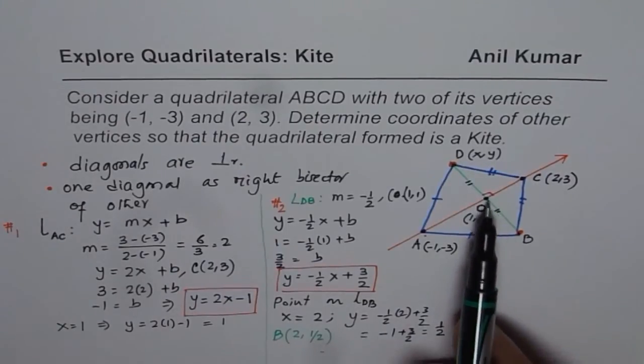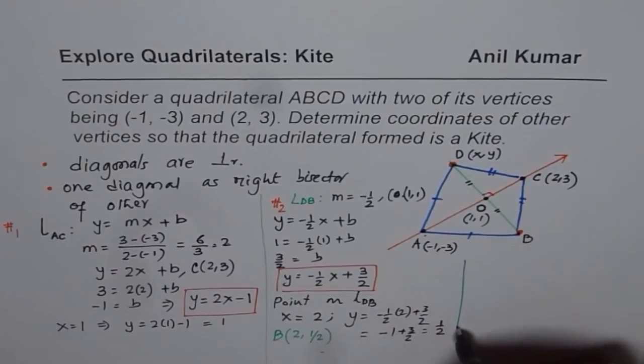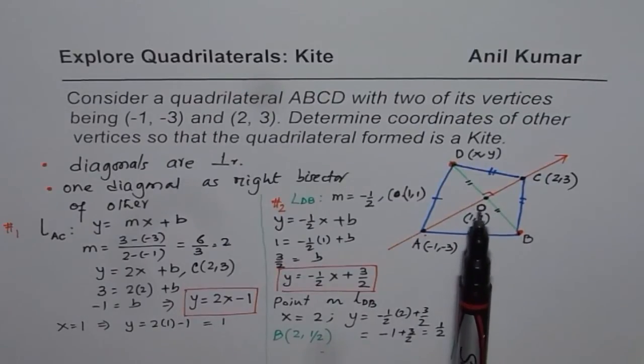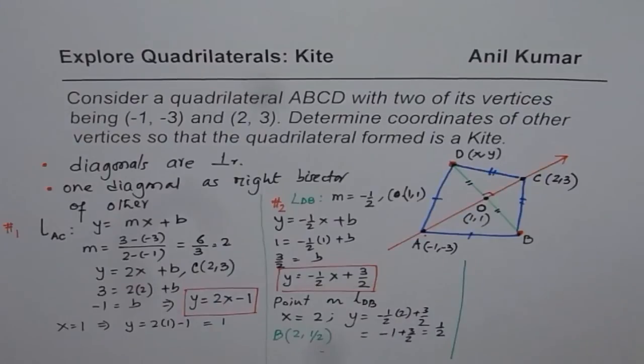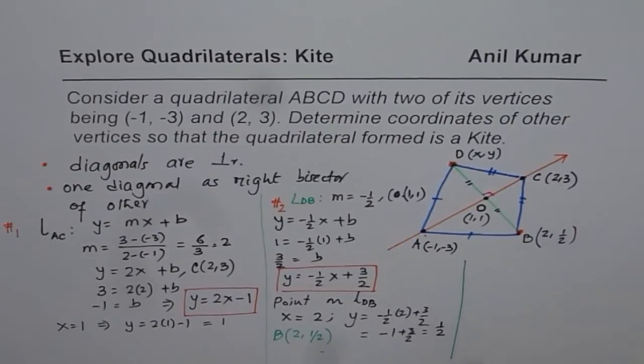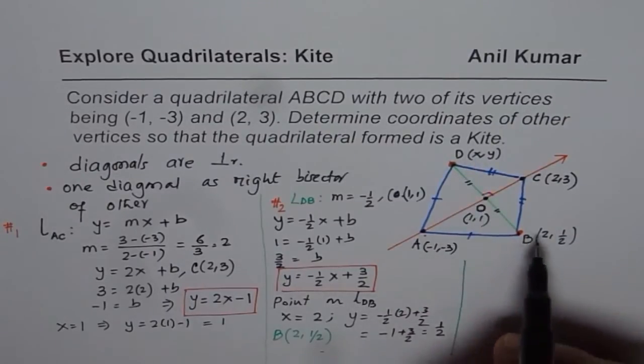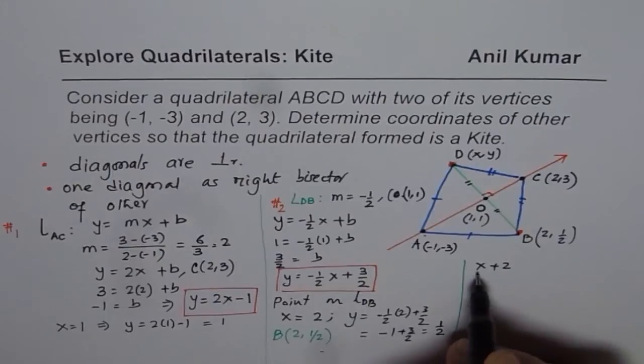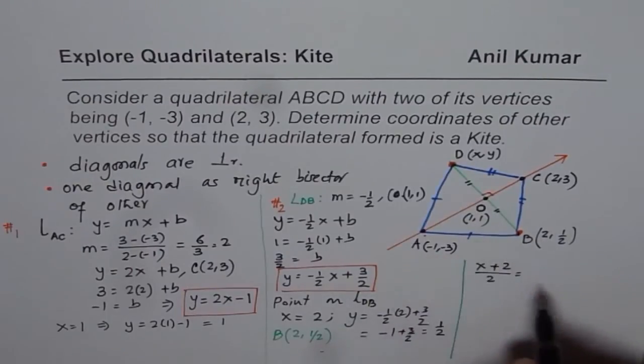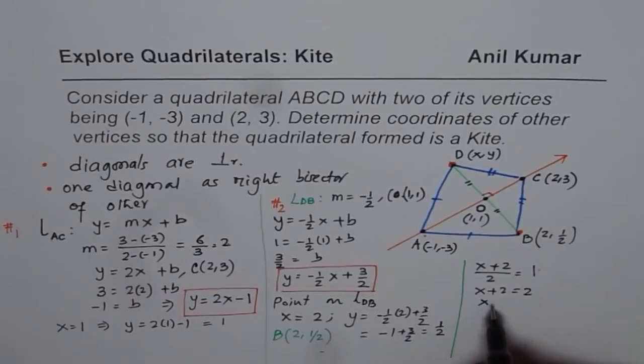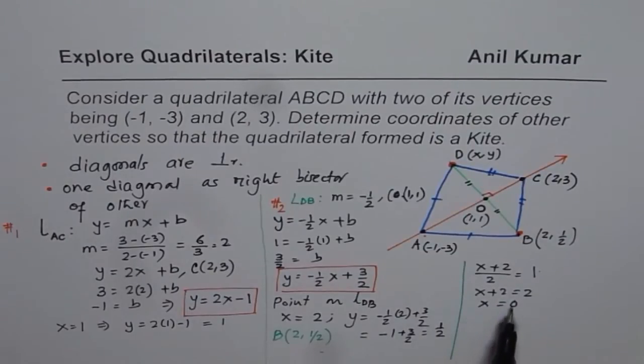Now, we know the coordinates of point B. How do you find coordinates of point D? That is the next question. We know that (1, 1) is the center of D and B. Therefore, assuming D is X and Y and B now we know is 2 and ½, 0.5. We can find X with the help of the midpoint. So, X plus 2, which is the average of the X values, divided by 2 should be equal to 1. That gives X plus 2 equals to cross multiply and X equals to 2 minus 2, which is 0. So we get an X value of 0.